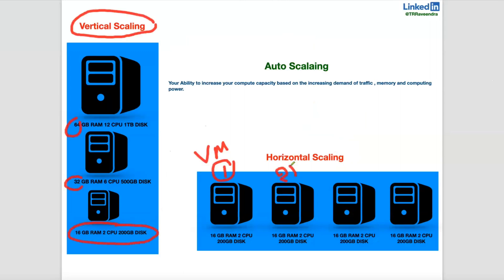Another VM with the same configuration, so now you will get 32 GB RAM. If you are looking for more capacity, they'll assign another VM with the same capacity — a third VM. If you are looking for still more capacity, they'll assign another VM, so you will get 64 GB RAM. This kind of scaling we will call horizontal scaling.